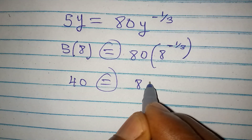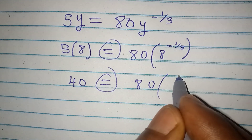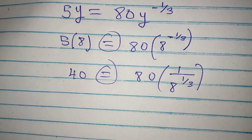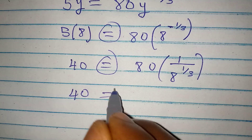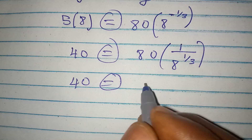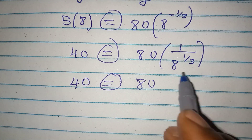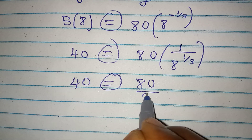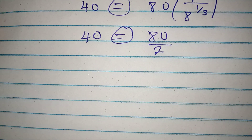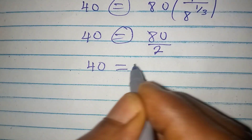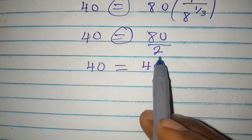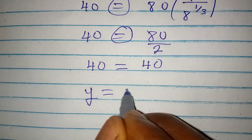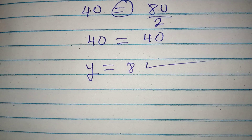Let's work on the right side. We are having 80, and this is going to be 1 over 8 to the power of 1 over 3. Now we have 40 on the left. We have 80, and 8 to the power of 1 over 3 is the same thing as the cube root of 8, and the cube root of 8 is 2. So it goes under the 80. 40 is definitely equal to 40 because 80 divided by 2 is 40. So we have confirmed that y is equal to 8 and it satisfies the equation. Thank you for watching.